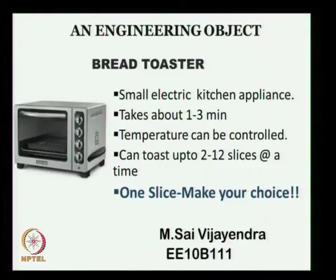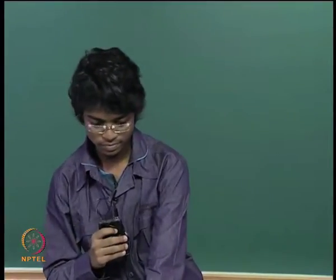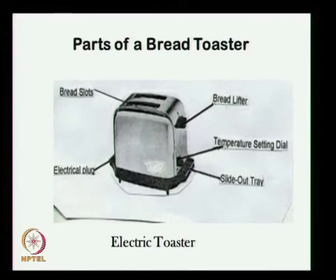Good evening, my name is M Sai Vijayendra and my roll number is EE10B110. Today, I am going to speak about bread toaster. Bread toaster basically is a small kitchen appliance and it takes about one to three minutes to toast a bread slice and its temperature can be controlled and it can toast from two to twelve pieces at a time. The parts of the bread toaster are as shown in the slide. It has bread slots, an electric plug, a bread lifter, temperature setting dial, and a slide-out tray.